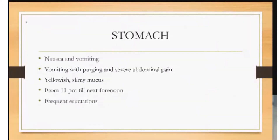When the doctor comes to check on the child, we see that he starts vomiting. The symptoms seen in the drug are vomiting with purging and severe abdominal pain. Since it is a worm remedy, the pain is obvious. The vomiting is yellowish and slimy, just as seen in the video. The vomiting lasts from 11 PM until the next forenoon, with frequent eructations.